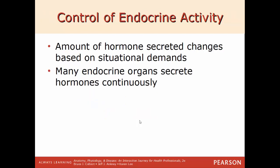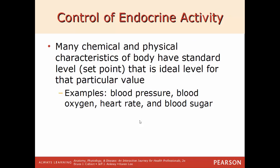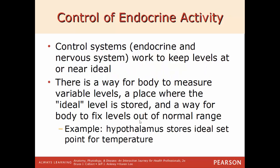The amount of hormone secreted changes based on situational demands. Many chemical and physical characteristics of the body have a standard set point — blood pressure, blood sugar, heart rate, oxygen levels — that is ideal at all times. The endocrine and nervous systems work together to keep these levels near or at their ideal level. There is a way for the body to measure these variable levels, store the ideal level, and fix levels when they get out of the normal range. For example, the hypothalamus stores the ideal setting for body temperature.